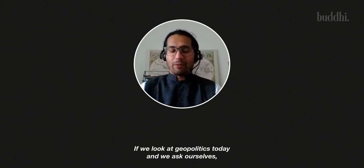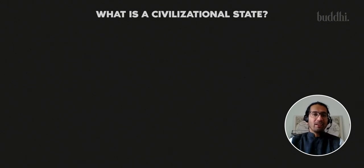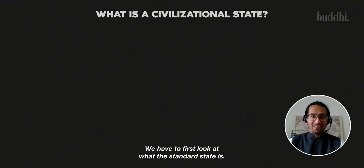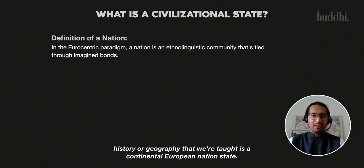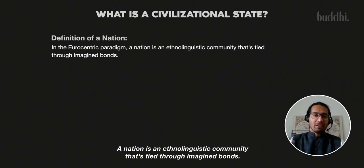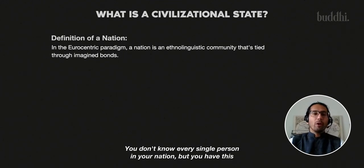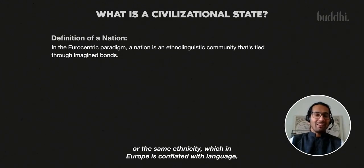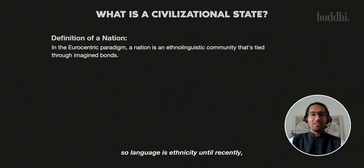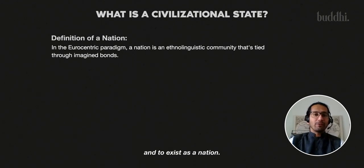If we look at geopolitics today and ask ourselves what a civilizational state is, and what the examples of civilizational states are, we have to first look at what the standard state is. The standard state in the Eurocentric history or geography we're taught is a continental European nation-state. A nation is an ethno-linguistic community tied through imagined bonds — you don't know every single person in your nation, but you have this subconscious feeling that because you share the same language or ethnicity, you are one, and that gives you a right to self-determination and to exist as a nation.